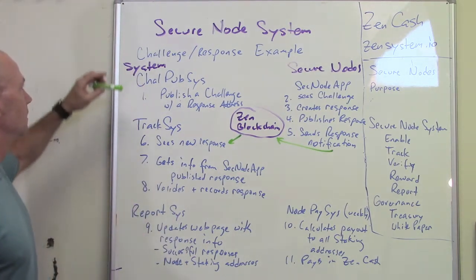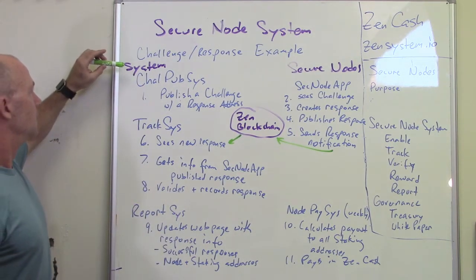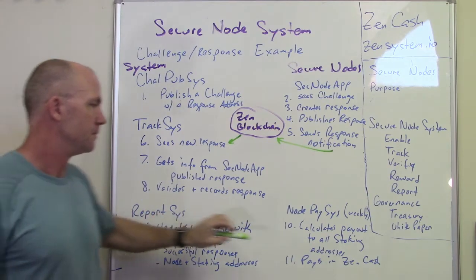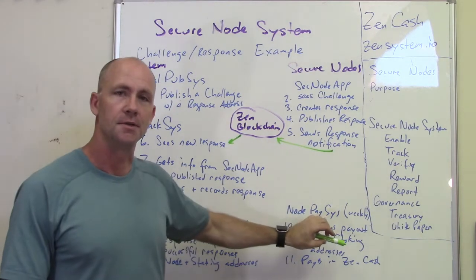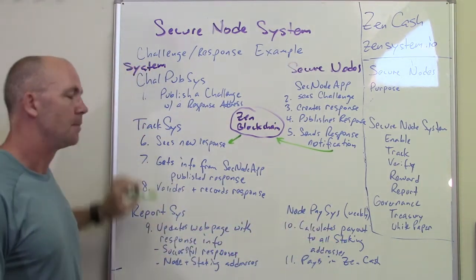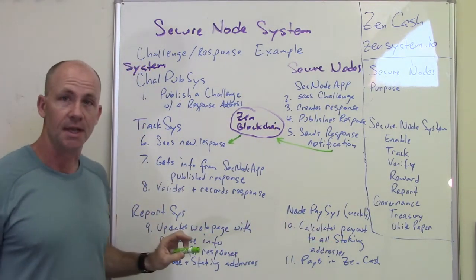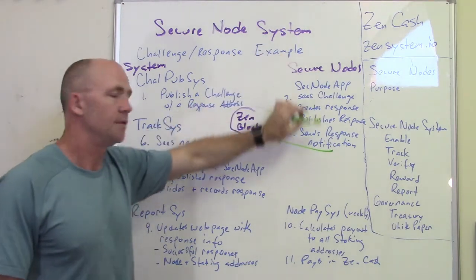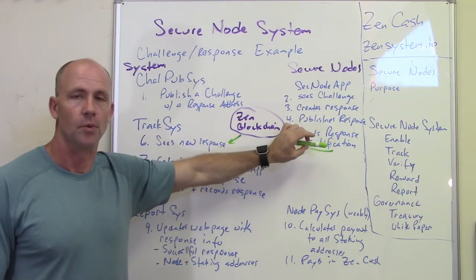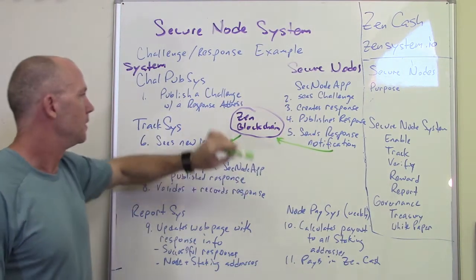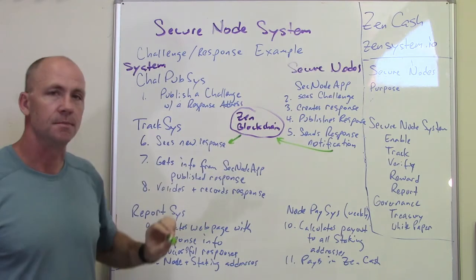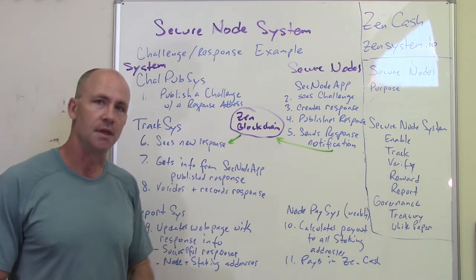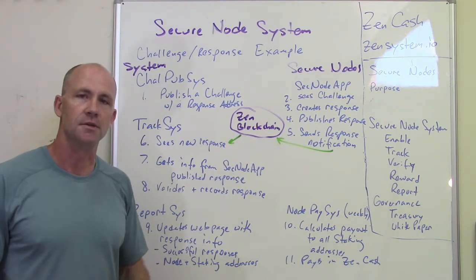All right, first off, these are the system servers that are run by and operated by the ZenCash team. And over here we've got the secure nodes — there's more than one. And they do some things on the blockchain and do some things over the internet using JSON.